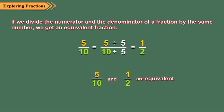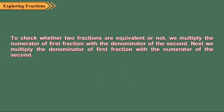If you are given two fractions, how will you check whether they are equivalent or not? To check whether two fractions are equivalent or not, we multiply the numerator of the first fraction with the denominator of the second. Next, we multiply the denominator of the first fraction with the numerator of the second. If the two products obtained are equal, it means they are equivalent, otherwise they are not equivalent.